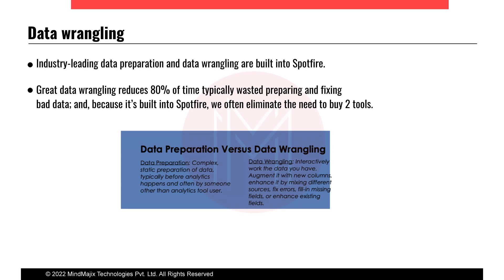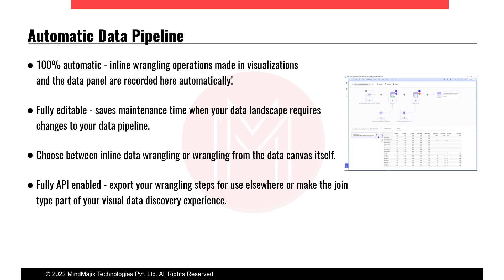Data preparation in Spotfire brings your complex and static data in and, before analytics happen, preps it — for example, eliminating duplicates. Data wrangling allows you to interactively augment new columns, enhance data by mixing different sources, fix errors, fill in missing fields, or enhance existing fields. You can apply multiple transformations before fetching data into Spotfire — changing data types, inserting new columns, adding new rows from different tables — and there are many transformations that can be built into the pipeline.